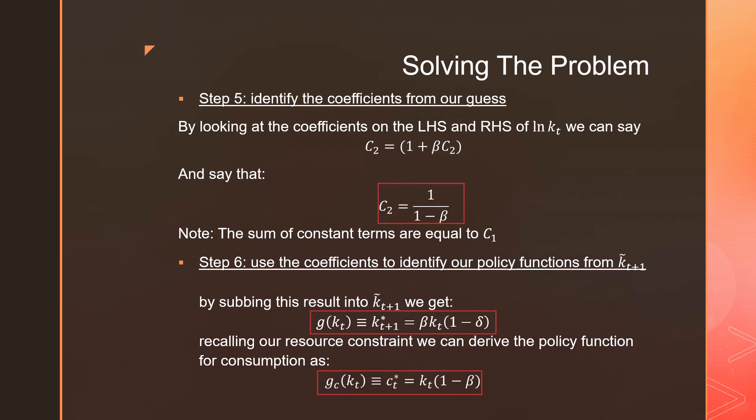And step number five is that we're going to identify the coefficients from our guess. By looking at the coefficients on the left-hand side and the right-hand side of log K_T, meaning that we want to look at the variables that are on the outside of log K_T, we can say that C_2 is equal to (1 + beta C_2). And rearranging this, we can actually identify what that coefficient C_2 is. That's going to be 1 over (1 - beta). Note also that, though I didn't say it here, I said it in a previous video, but all the constant terms, meaning all the terms which don't have K_T inside of it, is going to be equal to C_1, right? Meaning that we're going to take all those terms, put them together, add them all together, and that's our C_1. And step number six is that we're going to use this coefficient to identify our policy functions from K_{T+1} tilde. So subbing this in, we should get the following result, right? That is our policy function for capital accumulation. That's going to be equal to beta K_T times (1 - delta).